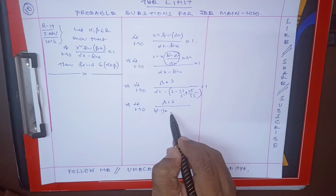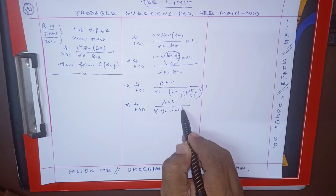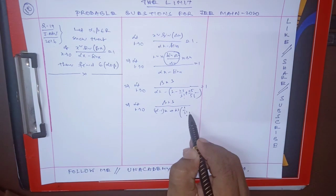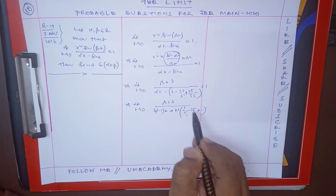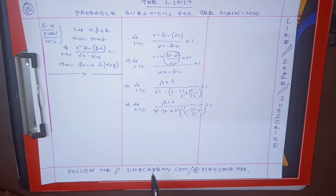This is equal to 1, and plus x cubed. Take 1 by 3 factorial minus x squared by 5 factorial like this, x squared by 5 factorial like this, so this is equal to 1.